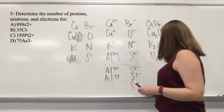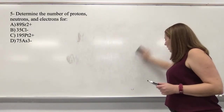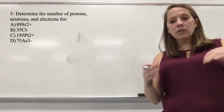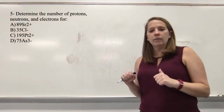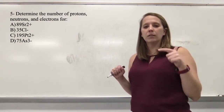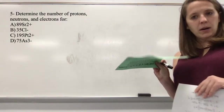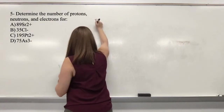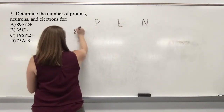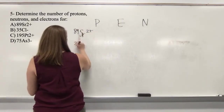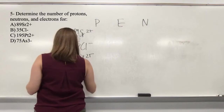In this next question we're going to look at creating compounds with polyatomic ions. An ion is an element with a charge. When we encounter cations or anions, we remove or add an electron. We're going to calculate the number of protons, neutrons, and electrons for four ions: ⁸⁹Sr²⁺, ³⁵Cl⁻, ¹⁹⁵Pt²⁺, and ⁷⁵As³⁻.